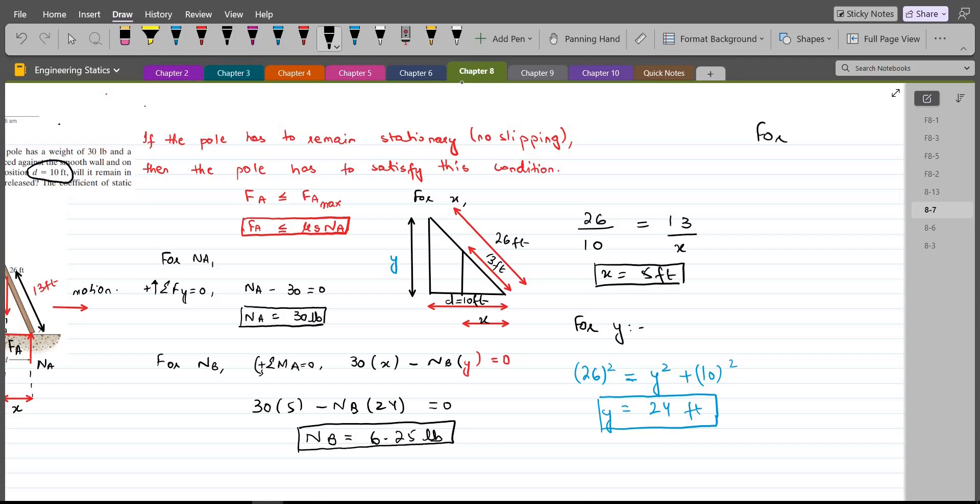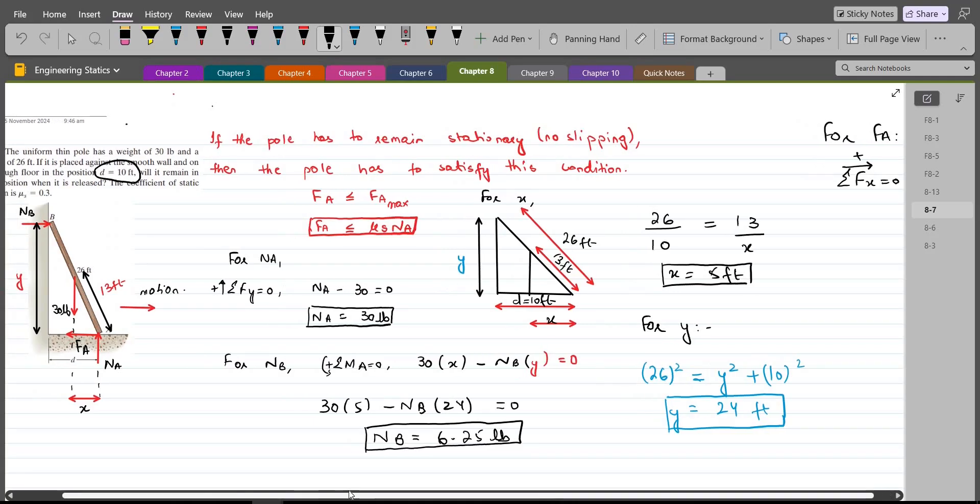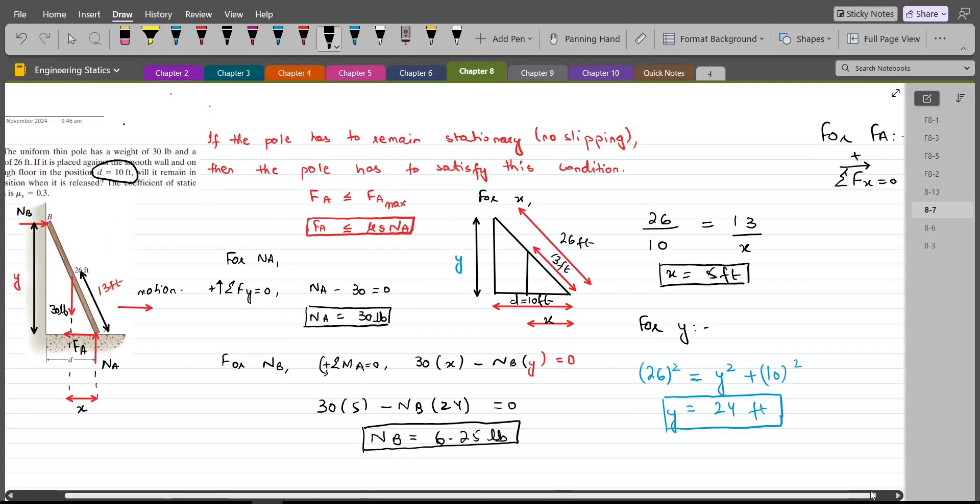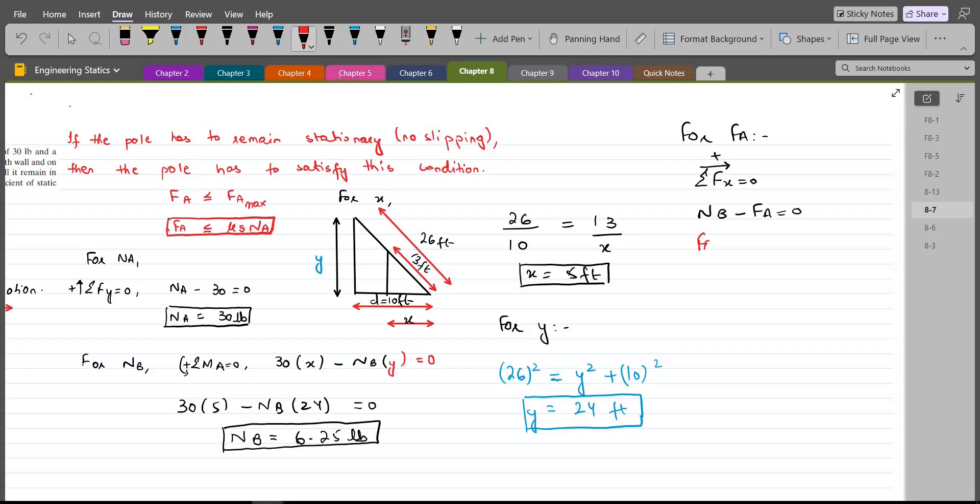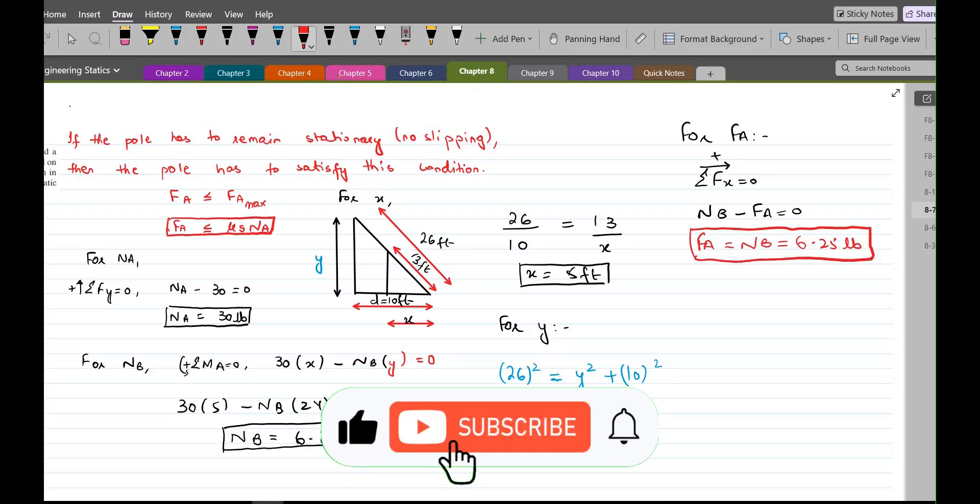So, for Fa I can do summation of forces in x direction equals to 0. I am considering the right hand side as positive. So, we have Nb minus Fa equals to 0. So, from here Fa equals Nb which equals 6.25 lbs. This is the value of the frictional force acting on the pole exerted by the floor.